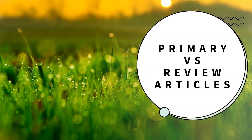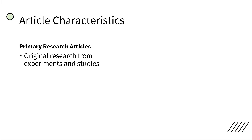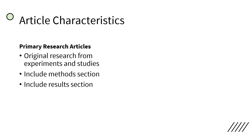First, let's talk about the differences between primary research articles and review articles. Primary research articles report original research findings from experiments and studies. They include a methods section explaining the experimental method used and a results section detailing the experiment. Often you'll see a section on the study's hypothesis as well.